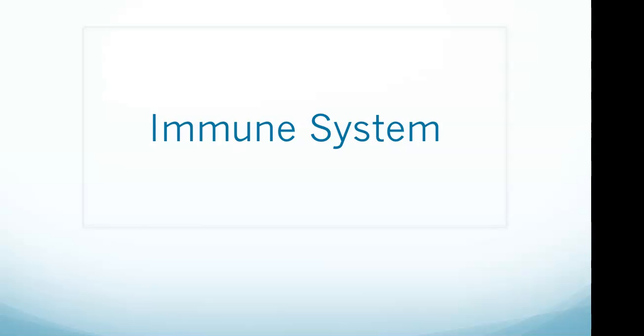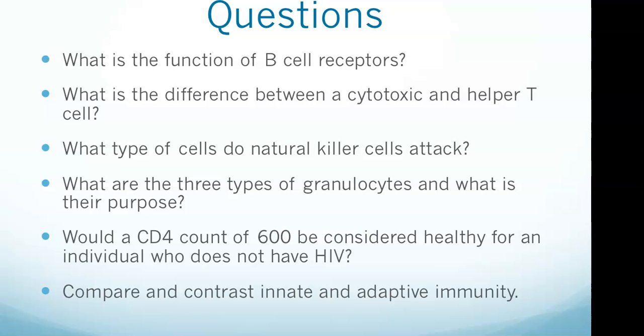Let's take a look at the immune system. We'll start with a bunch of questions that will be the focus of the video. We want to know what B cell receptors are, the difference between cytotoxic and helper T cells, what type of cells NK cells attack, the three types of granulocytes and their purpose, familiarity with CD4 count, and innate and adaptive immunity which are the two major categories of immunity.